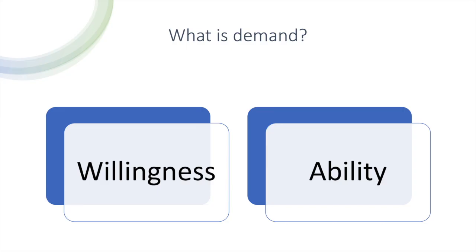Now, what is demand? Demand refers to the willingness and ability — these are the two concepts you have to understand before we go into detail on demand. Willingness means that as an individual, you are prepared and you want to buy a particular product. Ability means that you have the financial means, you have the money to buy the products. So technically, demand is the willingness and ability of a buyer to purchase a particular product in a period of time.